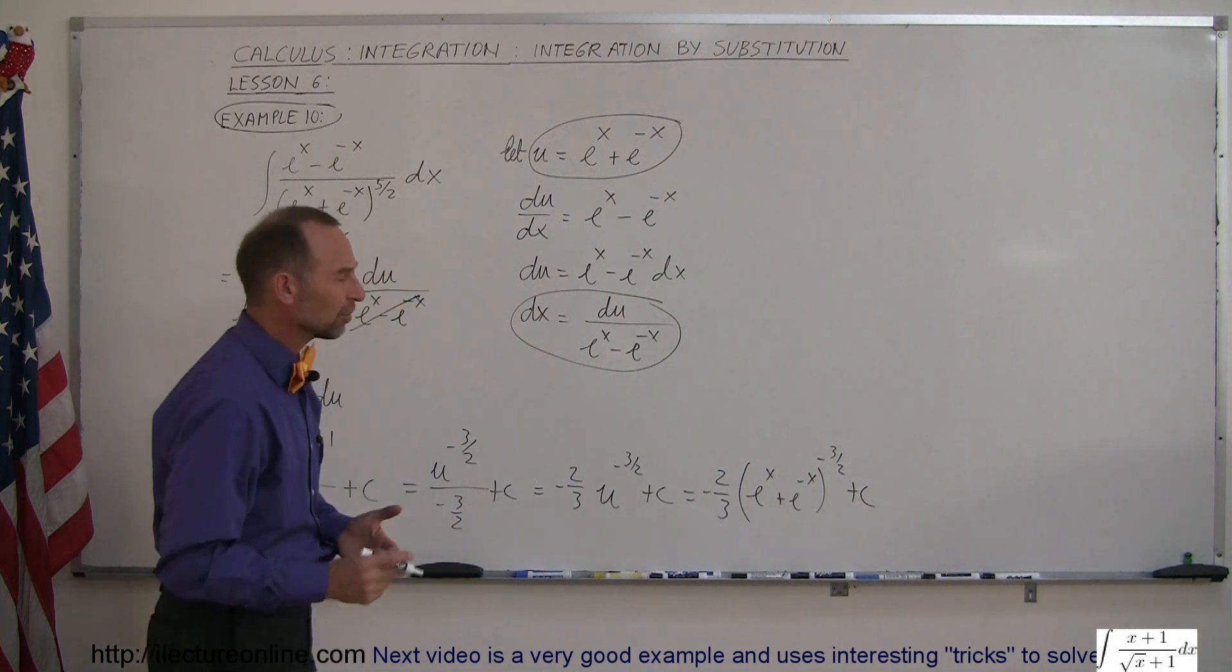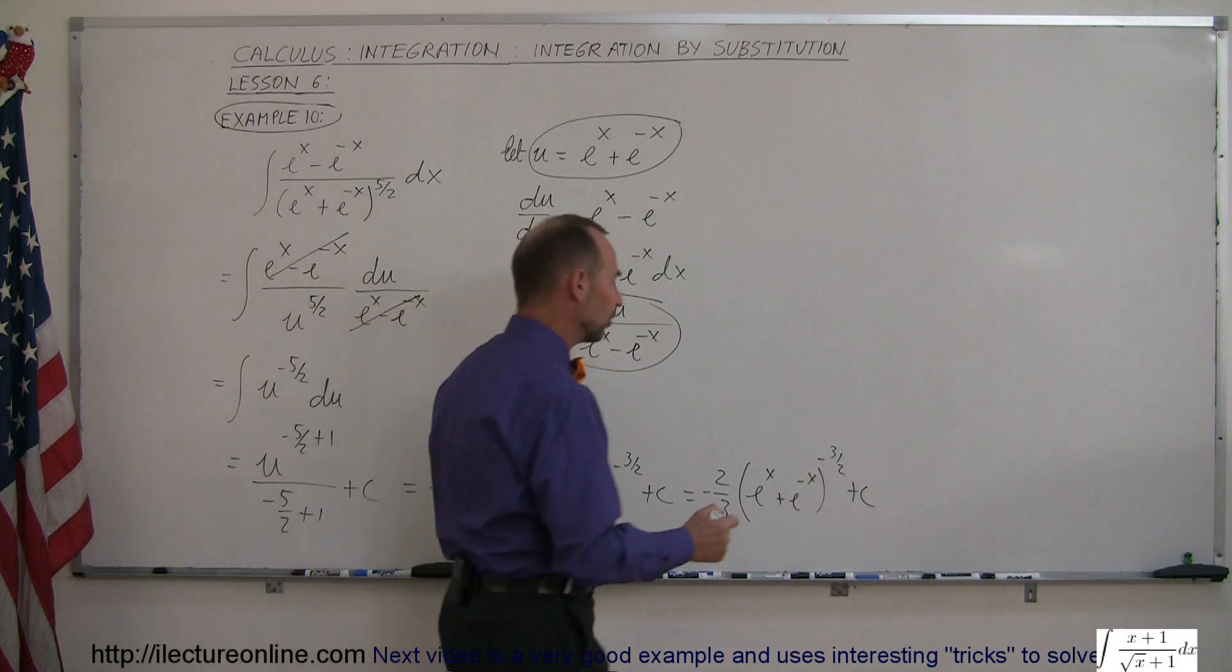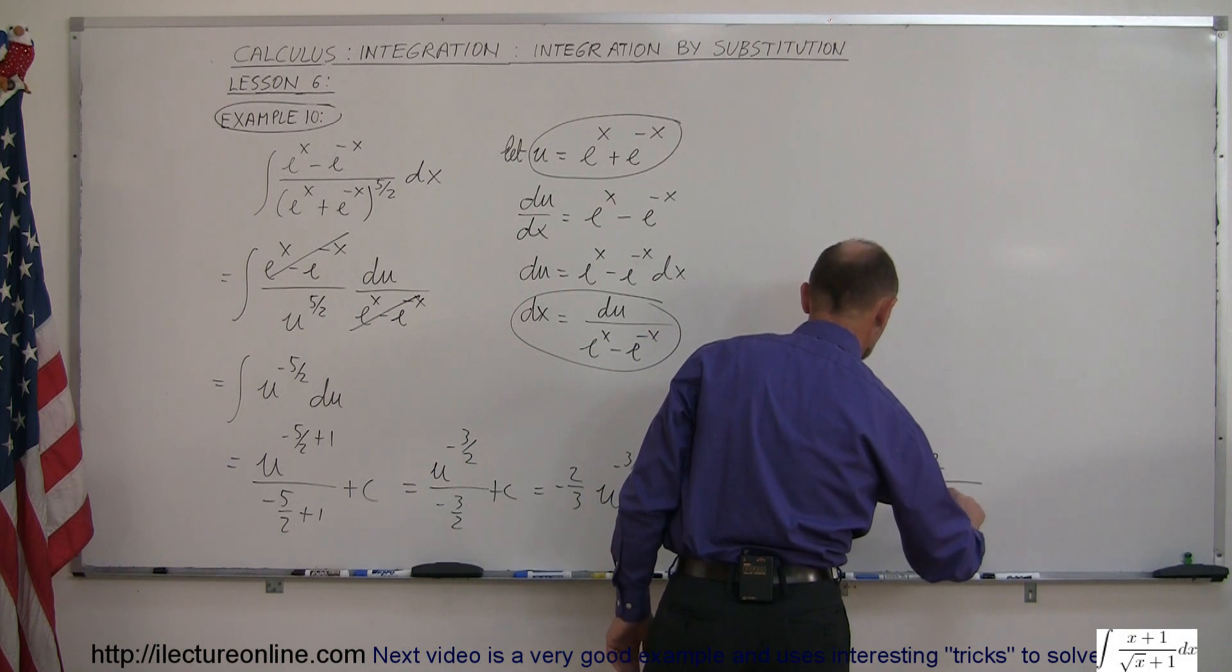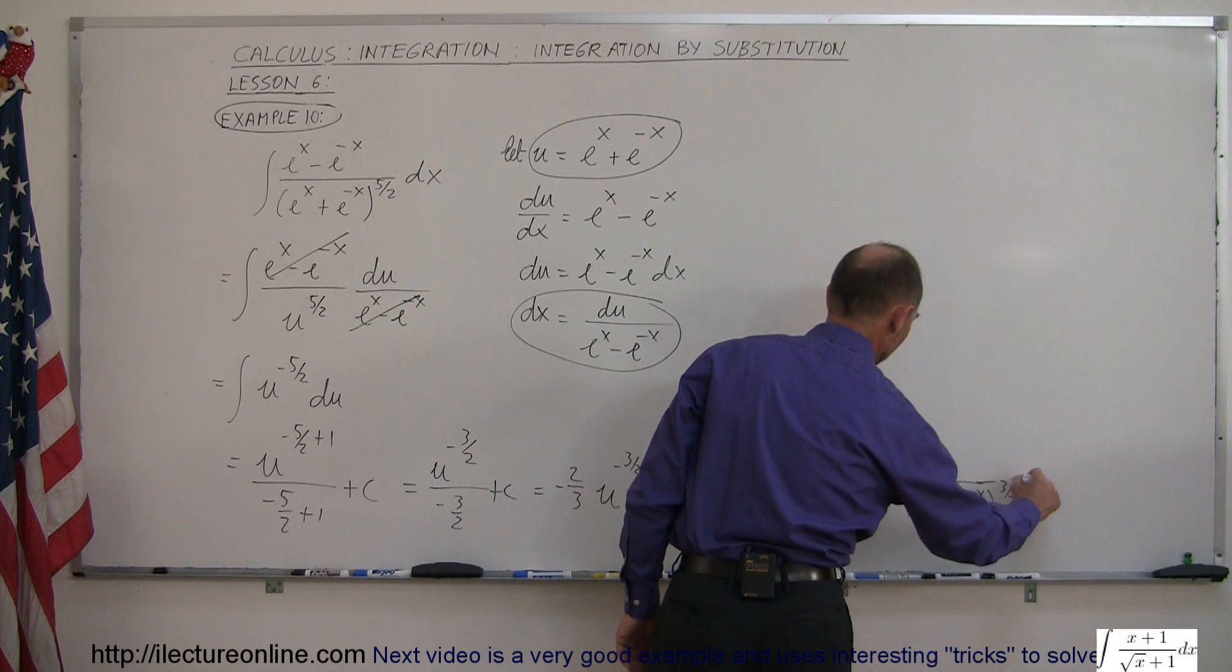And then of course since it's a negative exponent, you may want to write that then in the denominator, and you can then say this is equal to minus two divided by three times e to the x plus e to the minus x to the positive three halves power plus c.